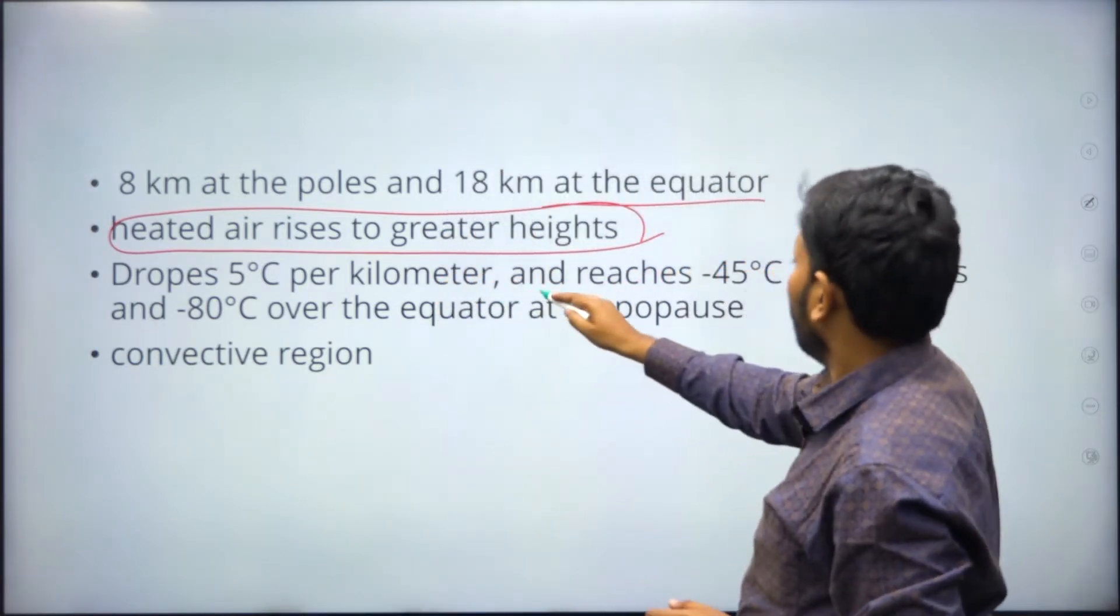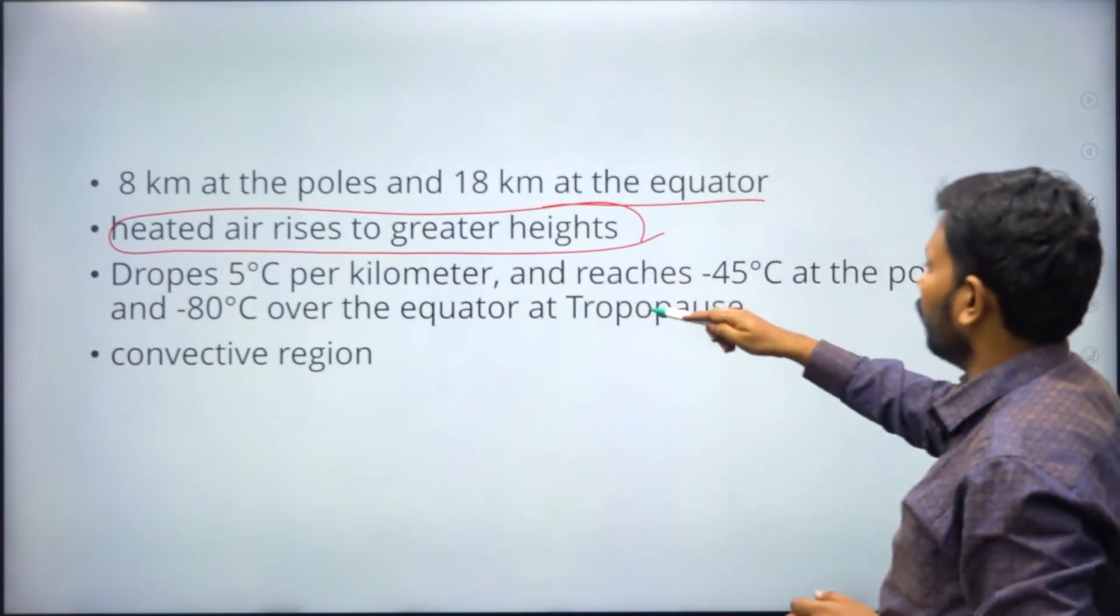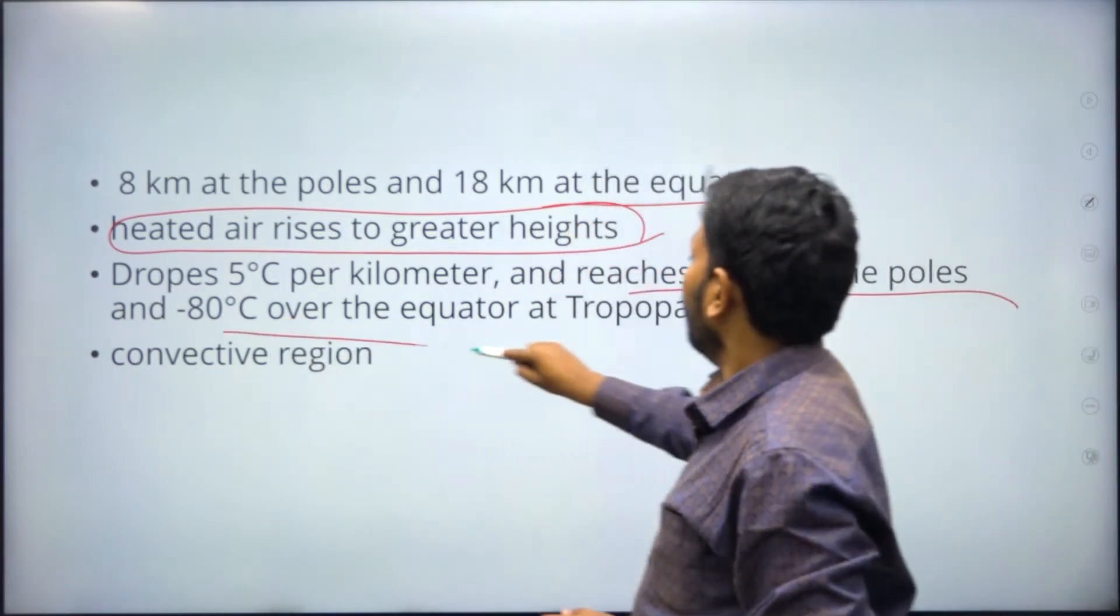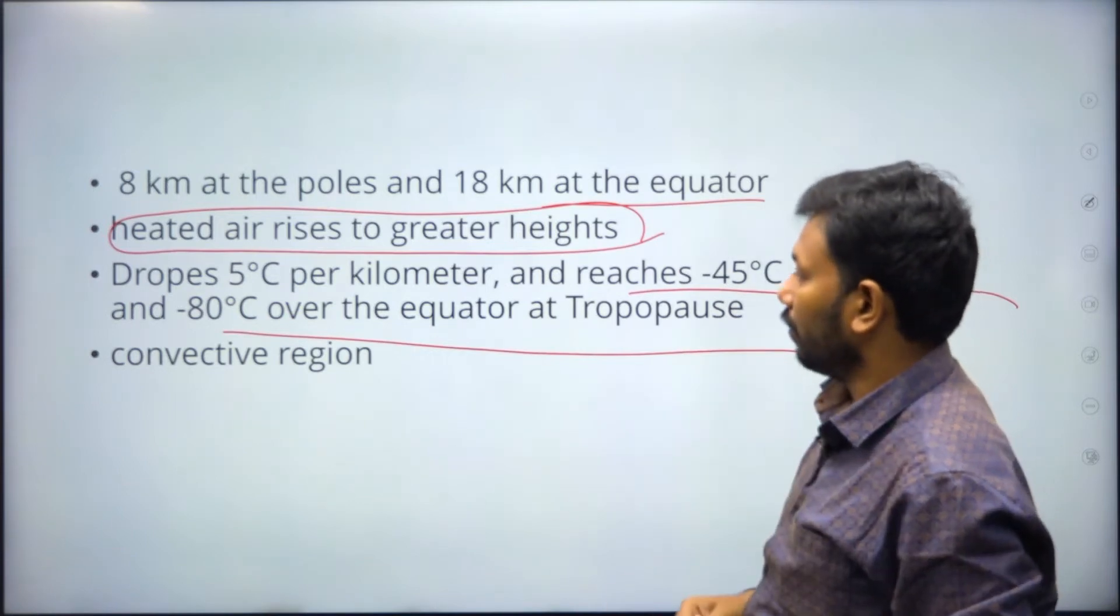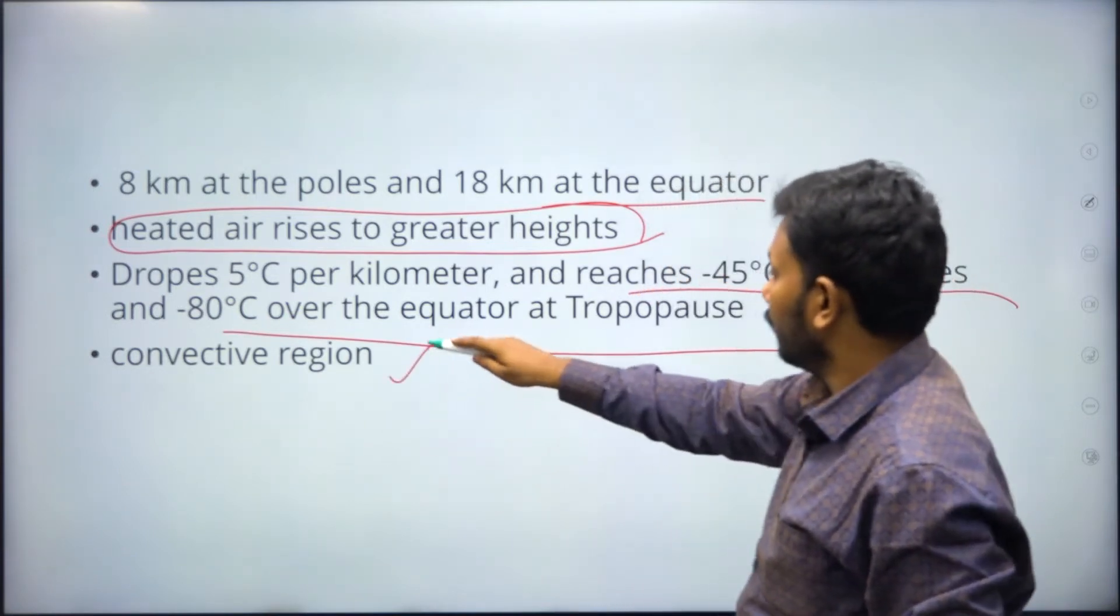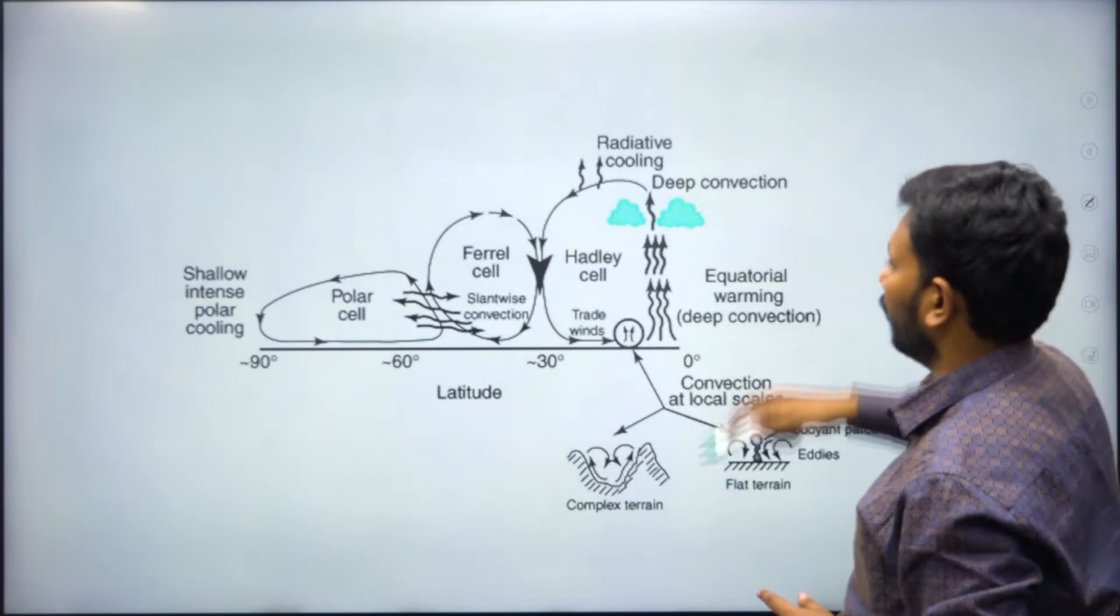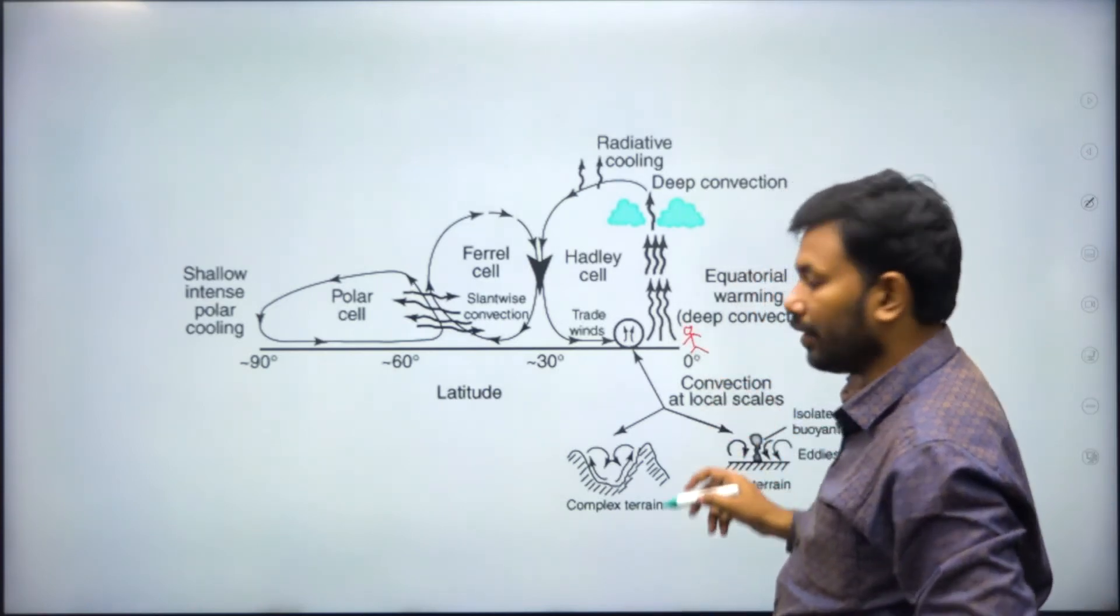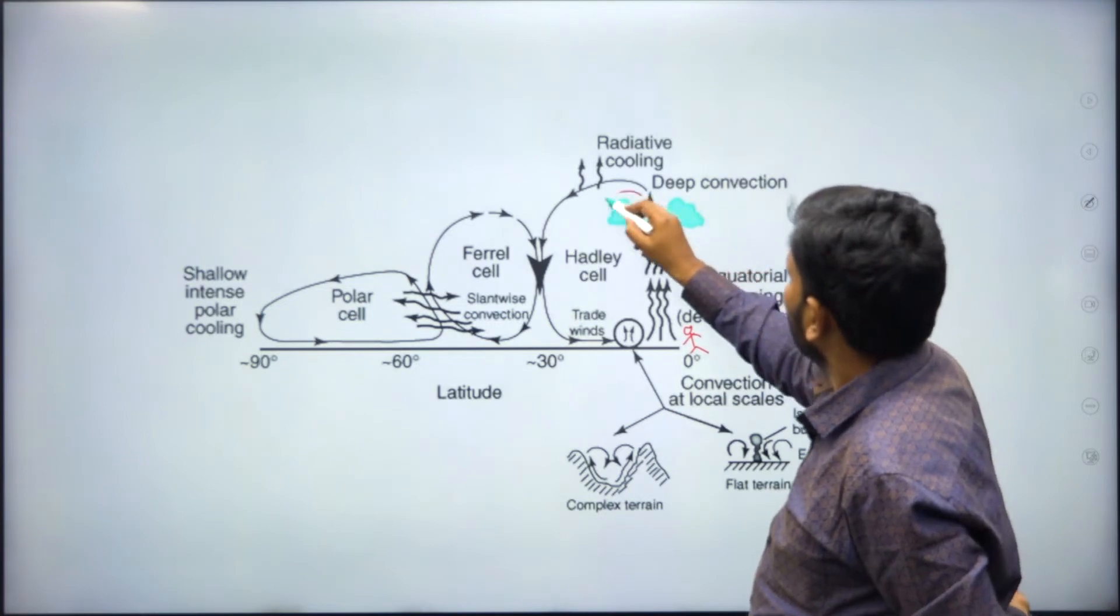It drops 5 degrees Celsius per kilometer. These are the characteristics. You have to write: minus 45 degrees at the poles, minus 80 degrees at the equator. This is a convective region. You have to stress this. All the air raises up.